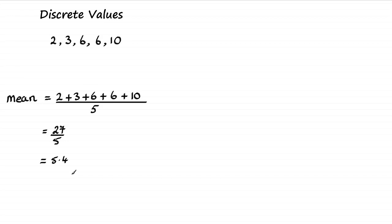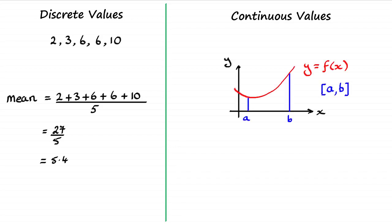Okay, now what I want to show you here is what happens when we've got continuous values. If you've got continuous values, let's say we have this graph here y equals some function of x, and we're looking at this continuous interval from a to b. That is, x is greater than or equal to a or less than or equal to b. It's given by this notation here. We're looking to find the mean of these values, or the average value, between this interval.